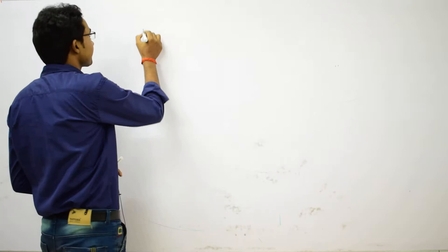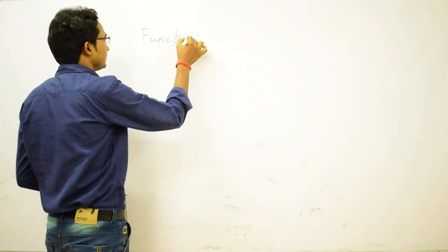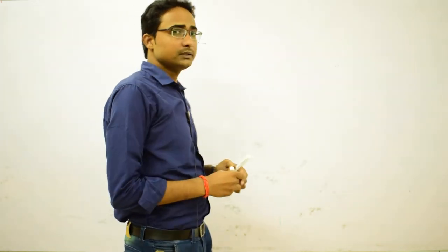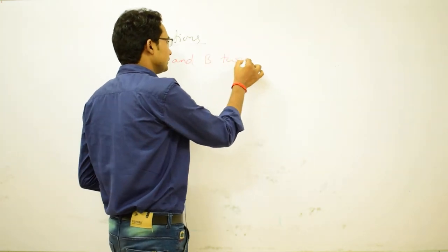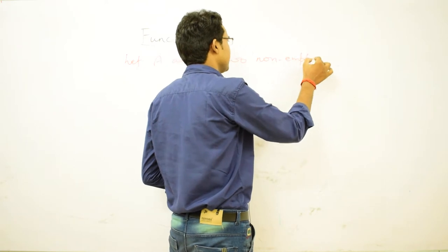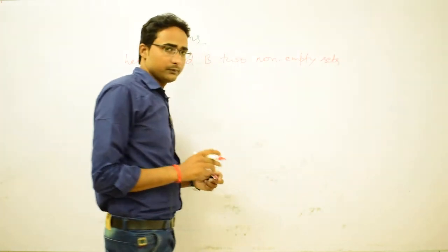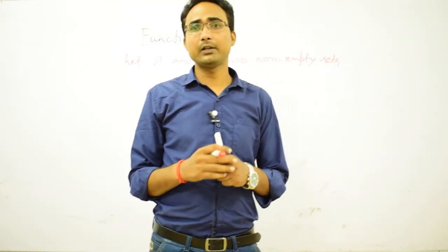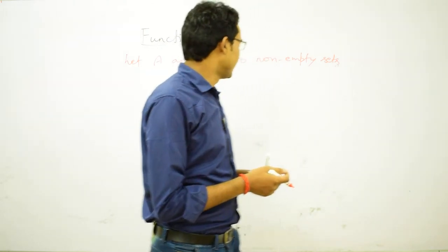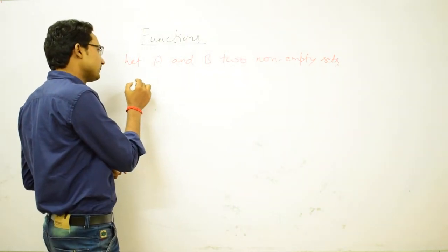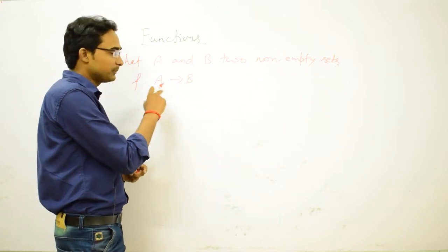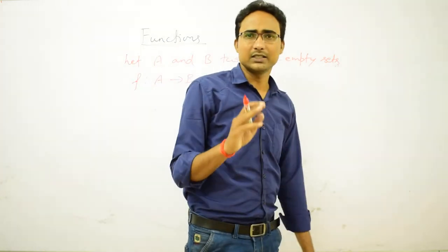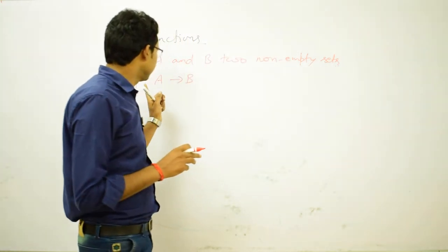For a function, firstly we have to consider two non-empty sets. Let A and B be two non-empty sets. After that we have to define a function from set A to set B. We represent function from A to B as f such that A tending to B.